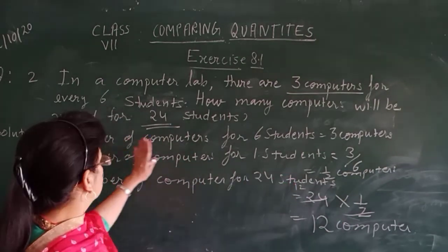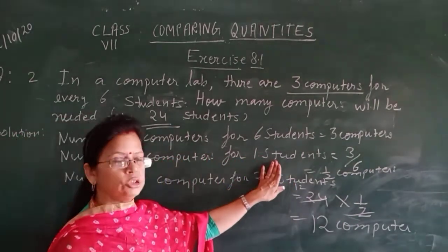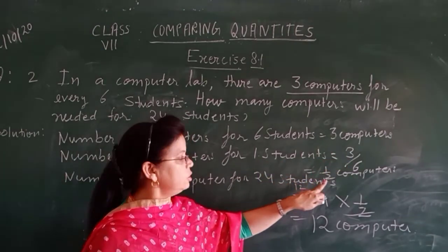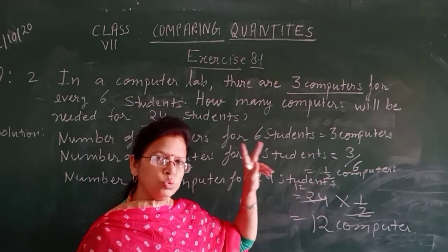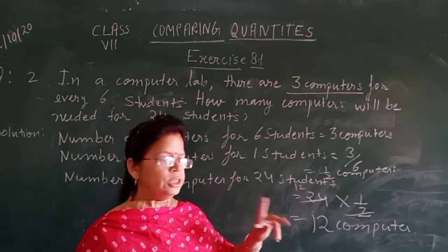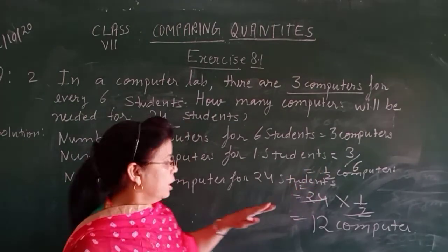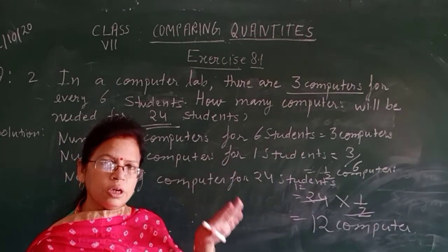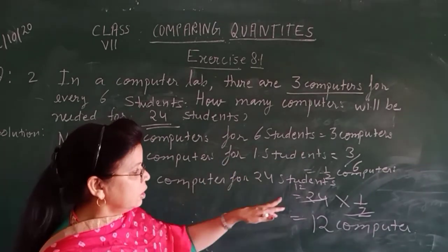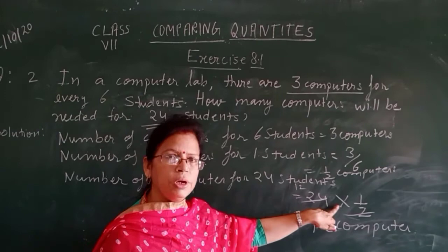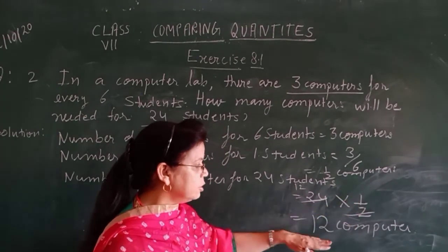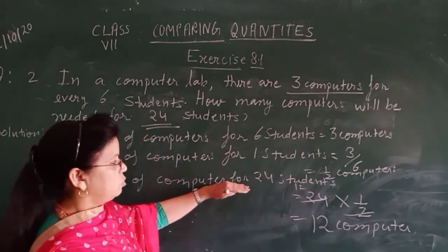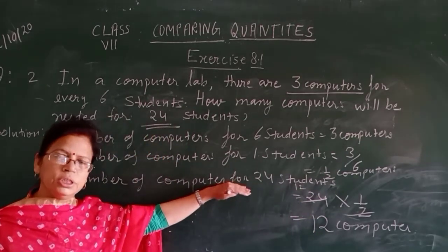In the second part, number of computers for 1 student — we have solved 3 over 6, that is 1 by 2. What does 1 by 2 mean? 2 students share 1 computer. And number of computers for 24 students — 24 students, how many computers are available for 24 students?